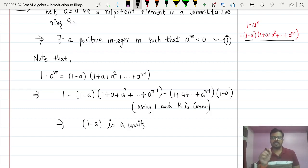So what we have proved? Given a non-zero nilpotent element a in a commutative ring R, then 1 minus a is a unit.